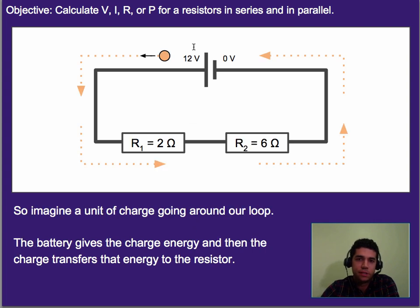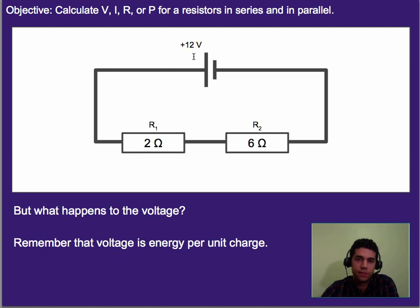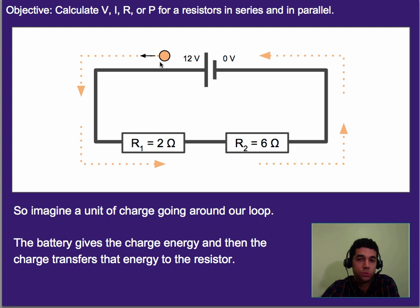What that means is, if we have a charge moving around, so imagine this little charge, we use a unit of charge moving around our loop, the battery gives it energy. In this case, if it's a 12 volt battery, often given with a little plus sign too, it adds 12 volts or 12 joules of energy per charge to our charge. So in this case, we have that it gives it 12 joules of energy per unit charge. And as that goes around, it's going to transfer that energy to the resistors, or to each of the resistors.